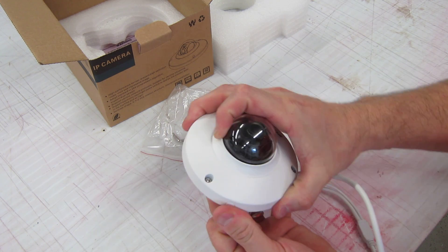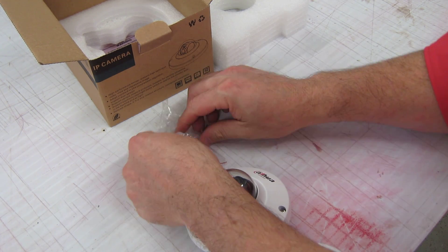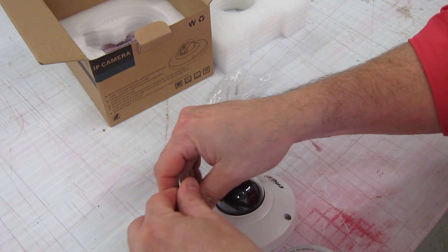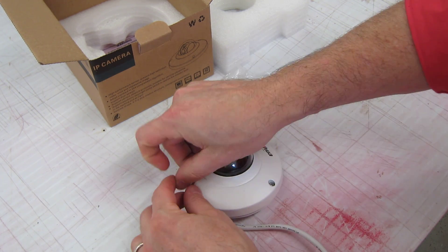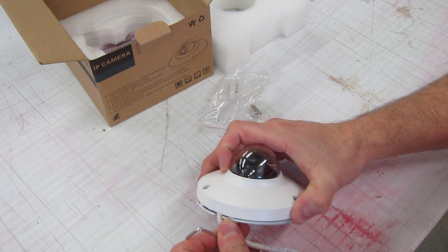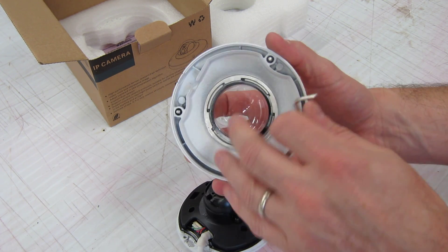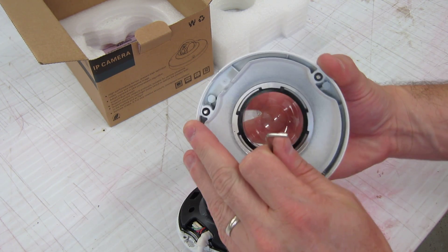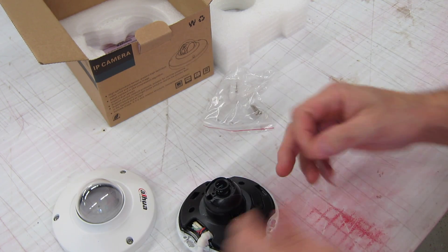I'm going to pull that off. Let's go ahead and undo the last screw here. Now, the screws have retainers in them, so if you're up on top of a ladder, don't worry, they won't fall out. They've got little O-rings on them.